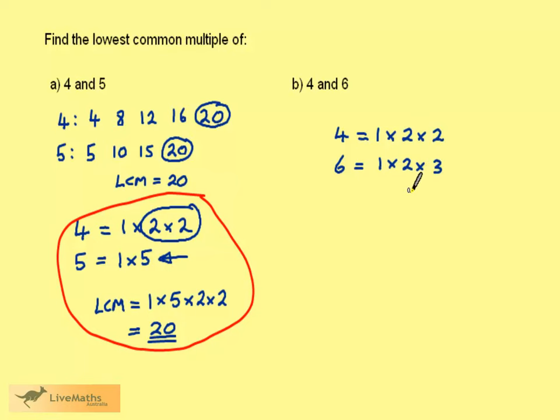For the lowest common multiple, start with the 6, that's 1 times 2 times 3. Now look at the 4. We already have a 1 times 2, but we don't have the extra 2, so we bring it in here.